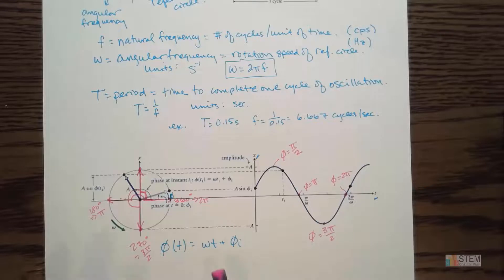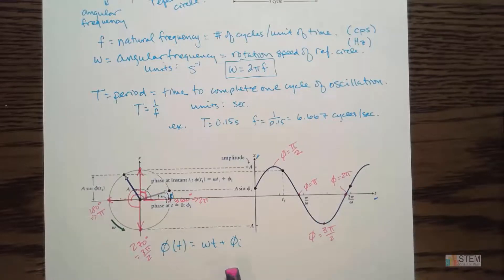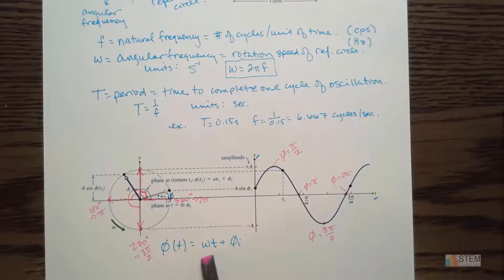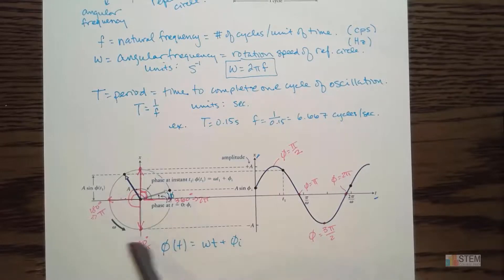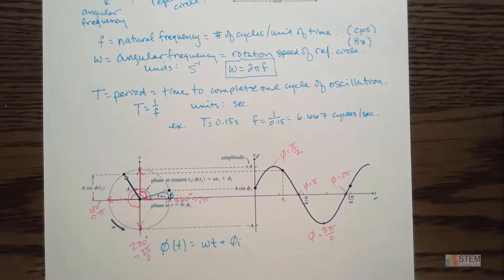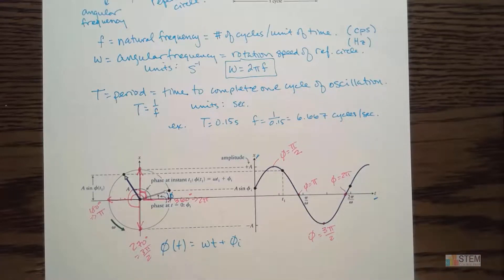So that's what the phase is — it's just telling you where your phasor is on your reference circle with respect to the horizontal axis. It's just an angle that you're calculating, done in radians versus degrees. The equation would be omega t plus phi sub i.